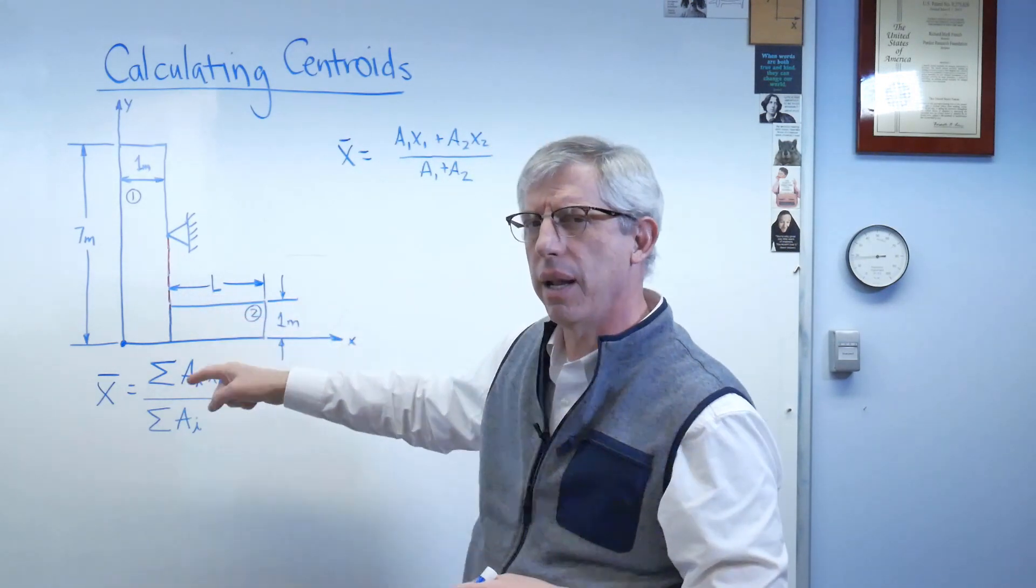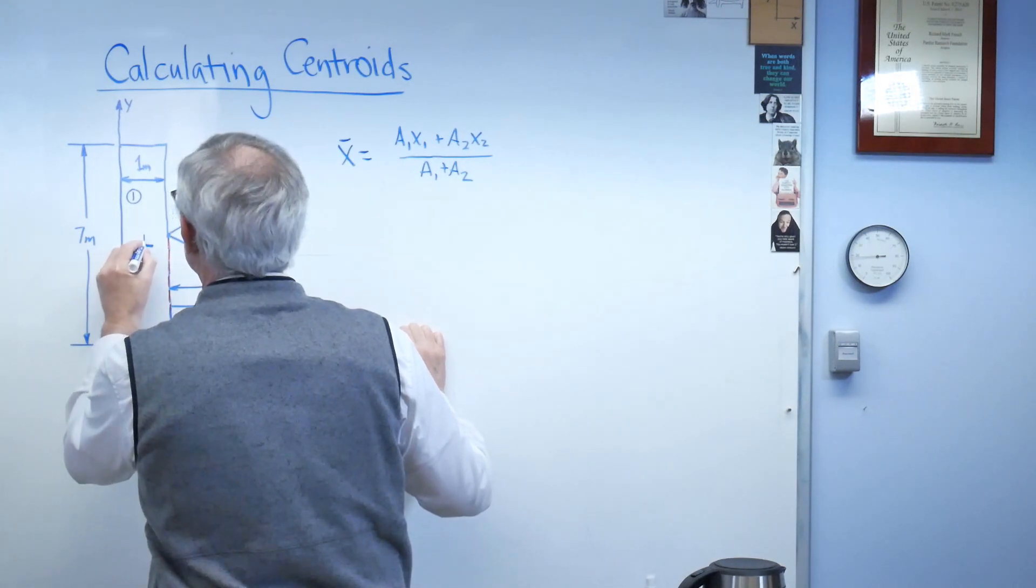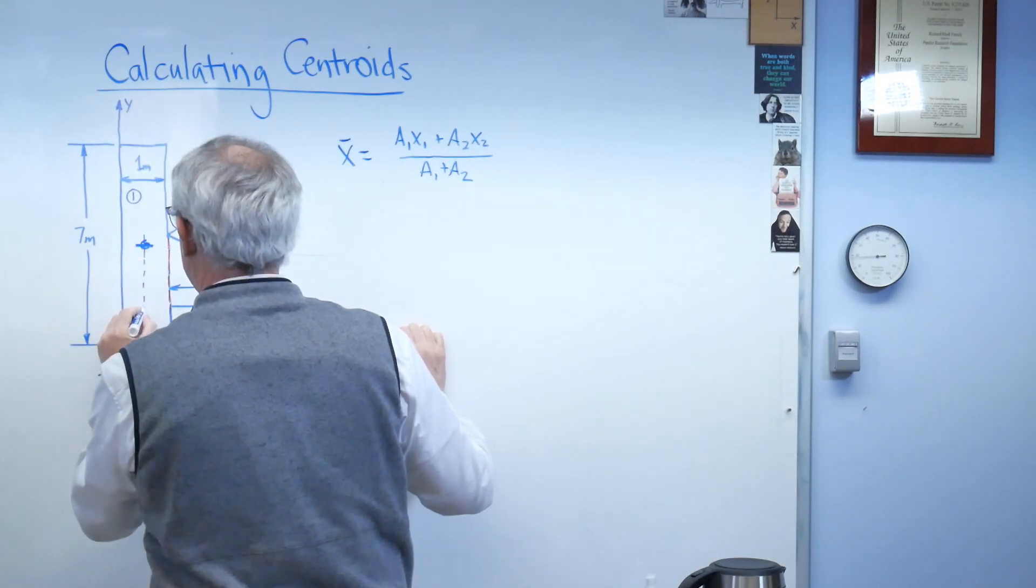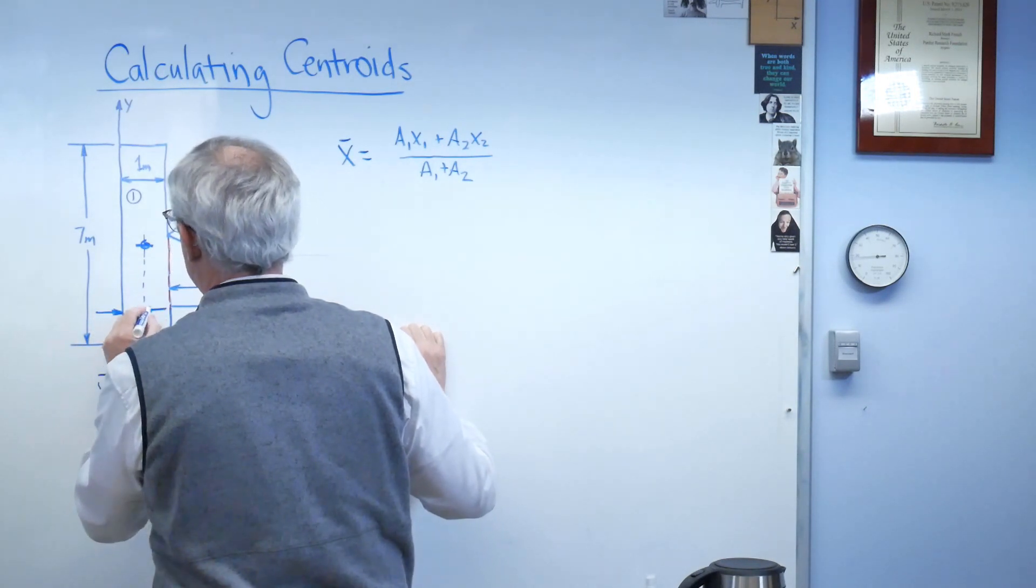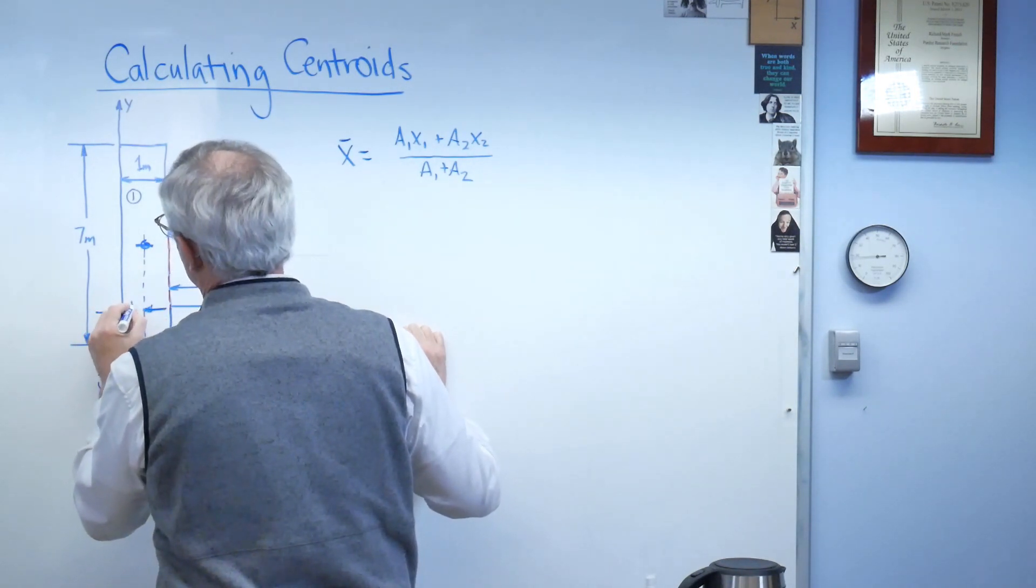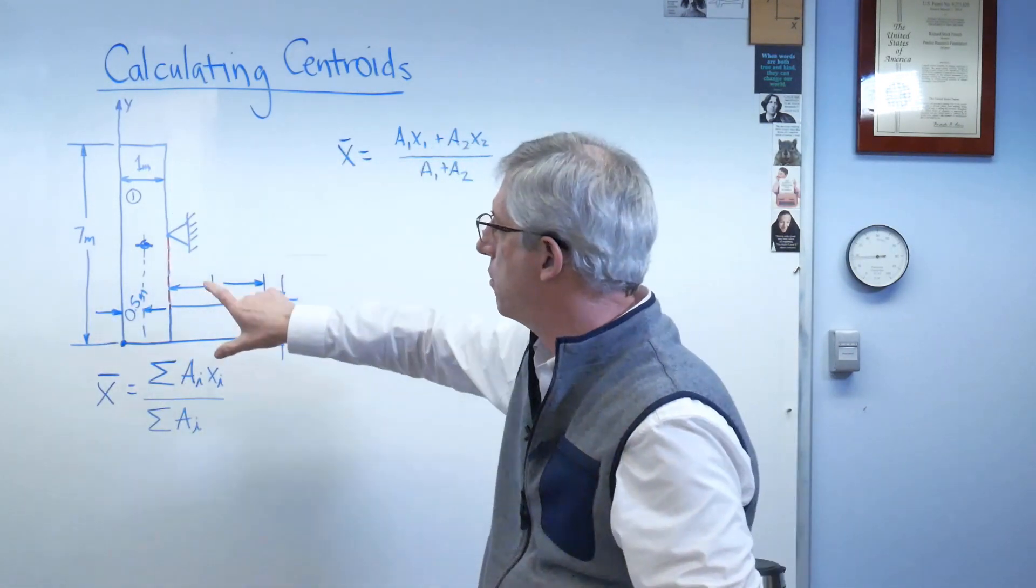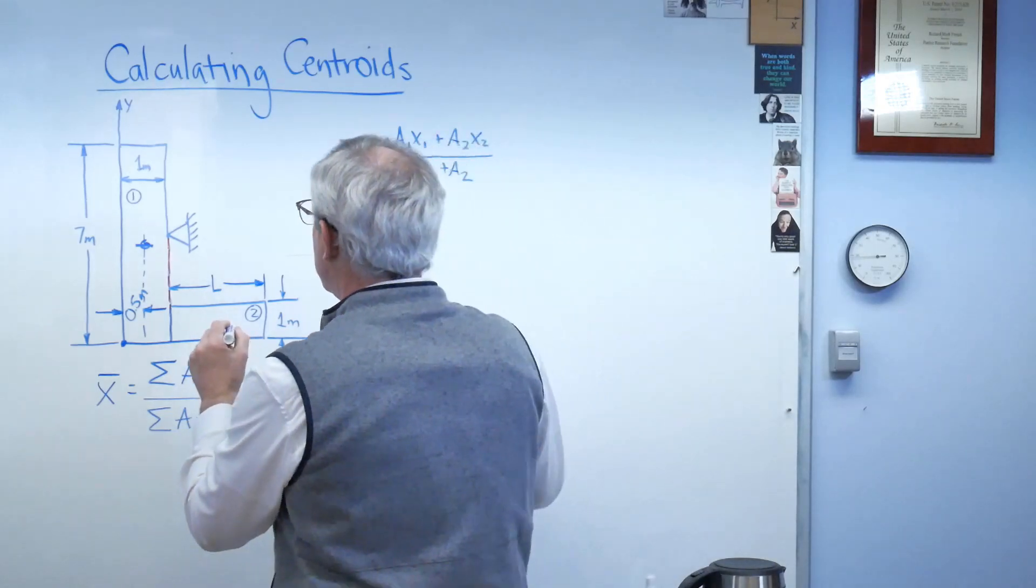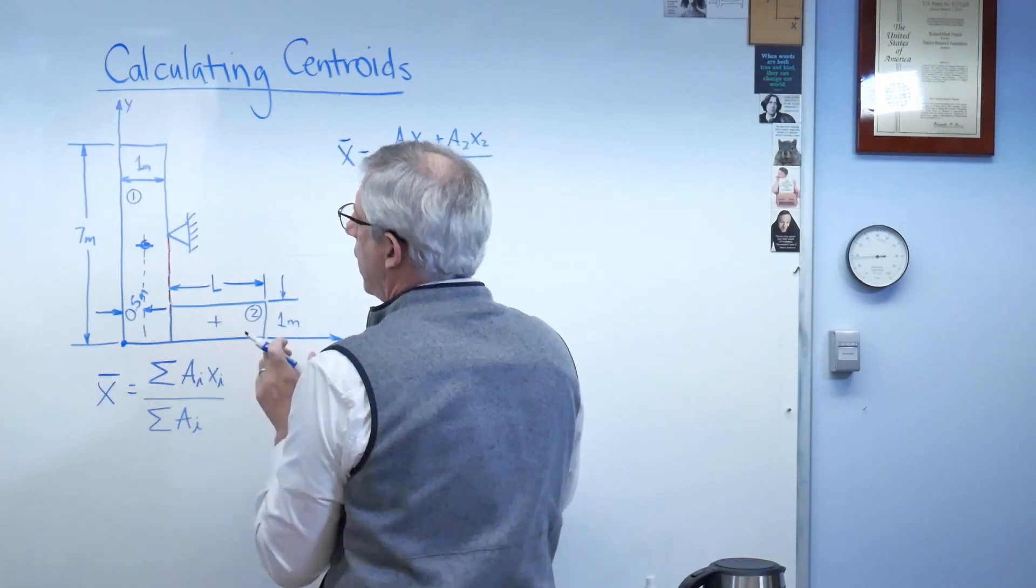Well, I don't actually know what that is. Is that a problem? No. Okay, so here's the centroid location right there, and that's 0.5 meters. Again, I don't care where it is vertical. It happens to be 3.5, but it doesn't matter here.